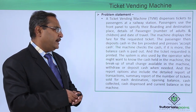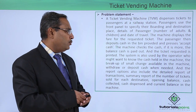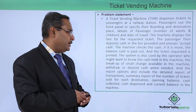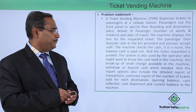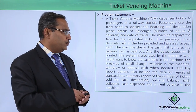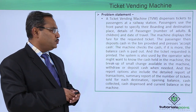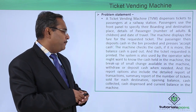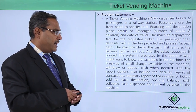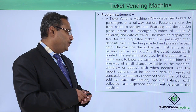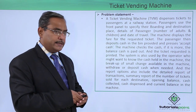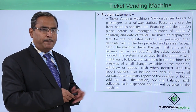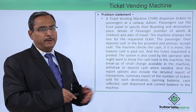The passenger then deposits cash in the bin provided and presses the Accept Cash button. The machine checks the cash. If it is more, the balance cash is paid out and the ticket requested is printed. The system is also used by the operator, who might want to know the cash held in the machine, the breakup of small change available, and withdraw or deposit cash when needed. This system will be used by both the passenger and the operator.